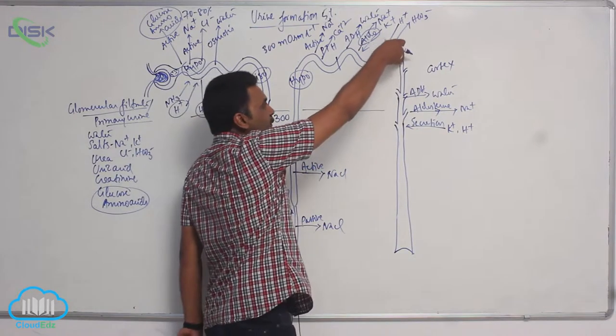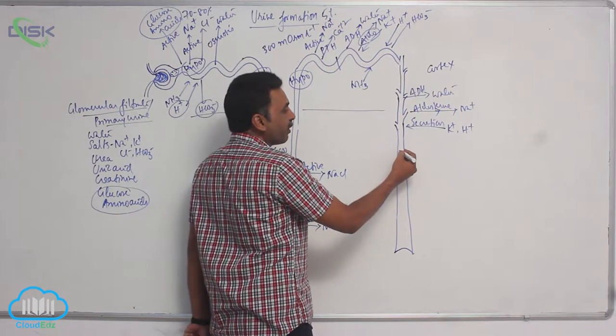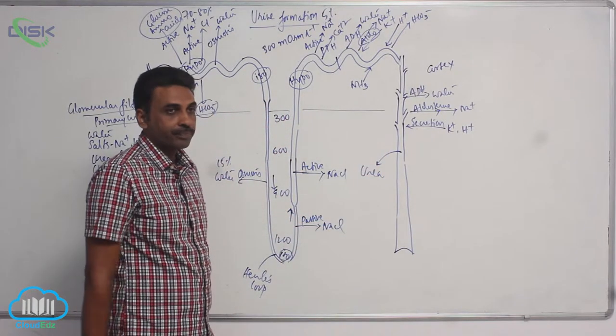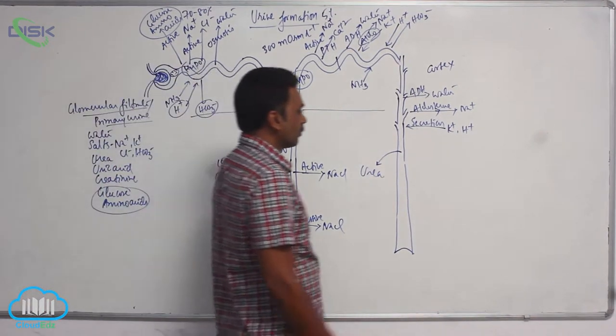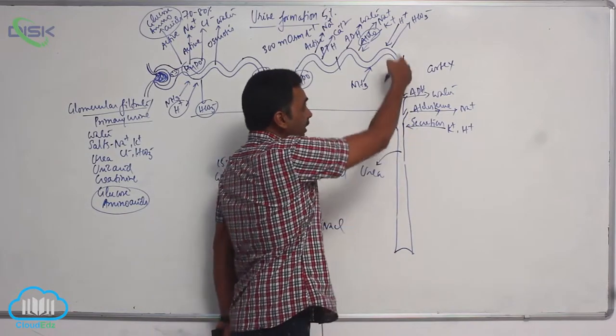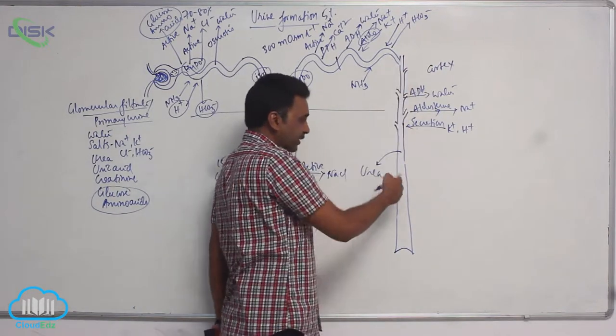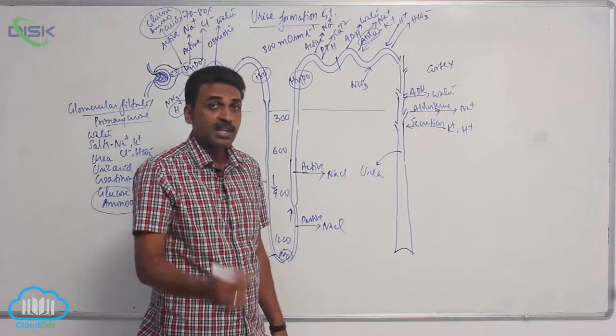You can also see when the fluid is passing down the collecting duct, a small quantity of urea is present. When urine is passing through the collecting duct, half of the urea will actually passively come outside by diffusion.